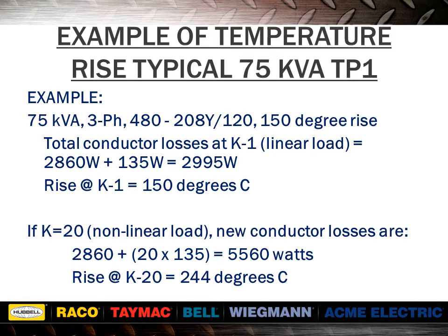In this example, a standard distribution 75 kVA transformer has 2,995 watts of total conductor losses at k-1, assuming a linear load. However, if the load is not linear — for example, at k-20 — the new losses would be 5,560 watts. This would increase the transformer temperature rise from 150 degrees Celsius to 244 degrees, resulting in overheating, shortened transformer lifespan, and possible cause for failure.